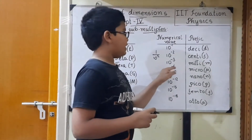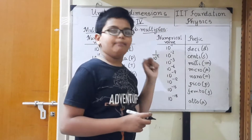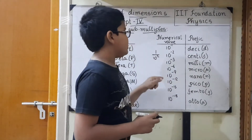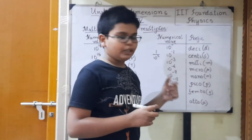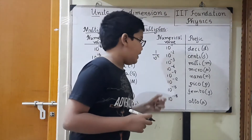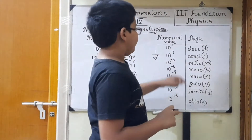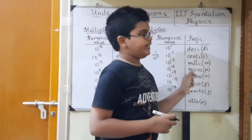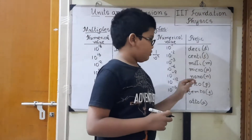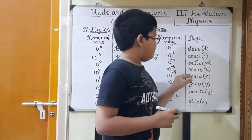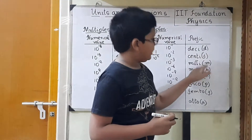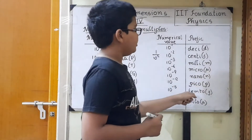10 power minus 6 meters equals 1 micrometer. 10 power minus 9 meters equals 1 nanometer. 10 power minus 12 meters equals 1 picometer. 10 power minus 15 meters equals 1 femtometer. 10 power minus 18 meters equals 1 attometer. The symbol for deci is small d — all these are lower case symbols. Centi is small c, milli is small m, and for micro the symbol is mu, which looks like this.